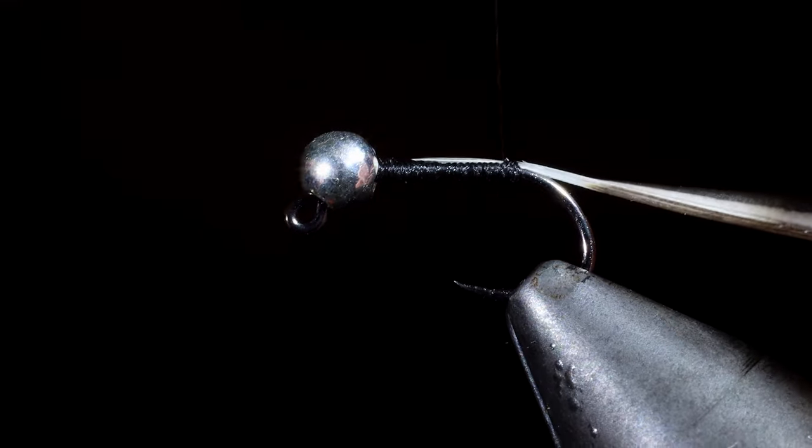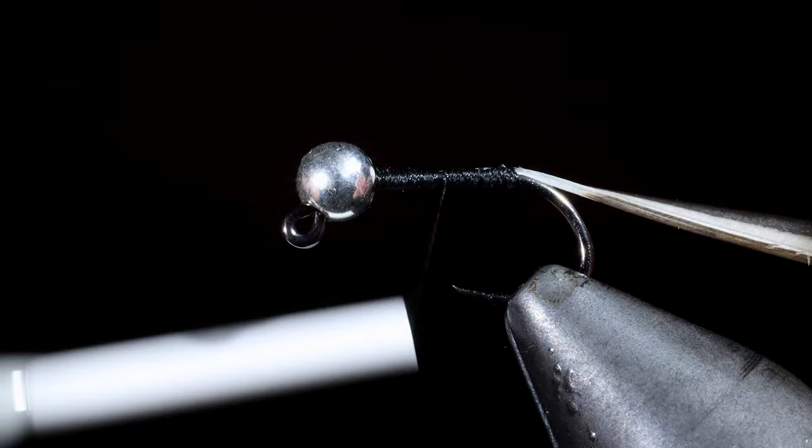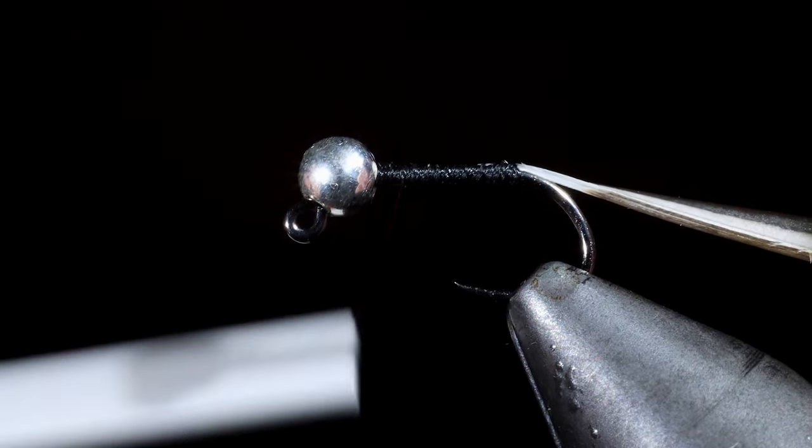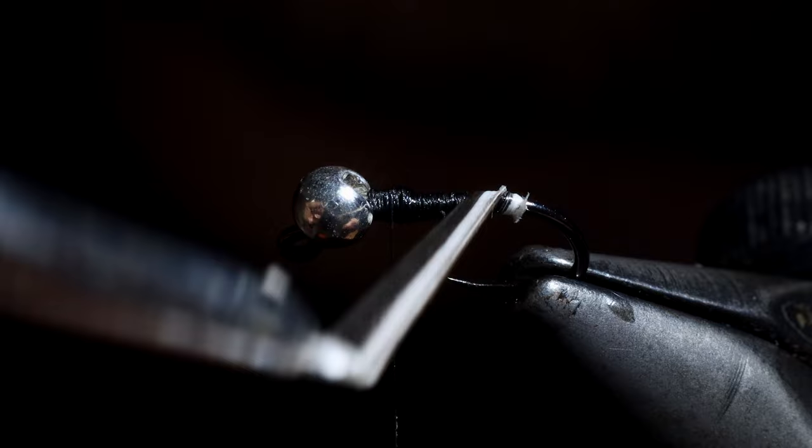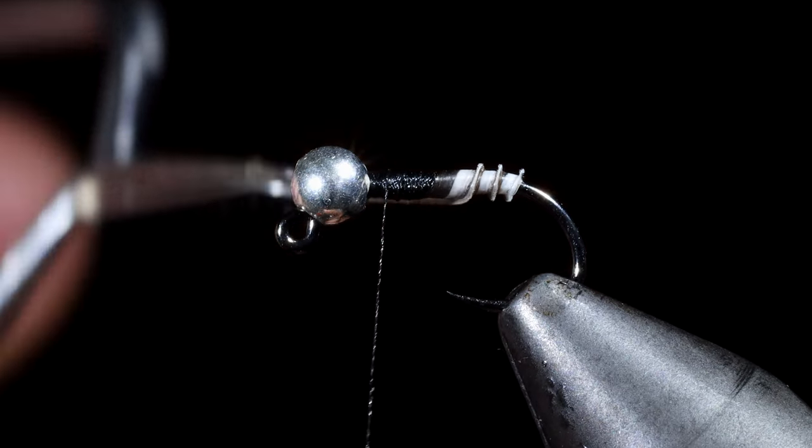We'll take further securing wraps as we move towards the head of the fly. Then you can use your fingers or a pair of hackle pliers to wrap your biot in close spirals towards the head of the fly.